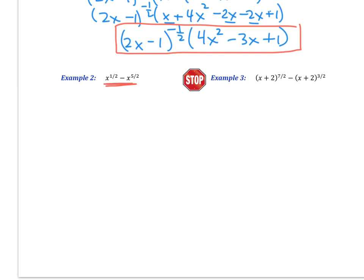So I can see here that I have x's in both, and it looks like the 1 half power is going to be the smaller of the 2. So I'm going to factor out x to the 1 half power. That's my GCF. And when I do that, x to the 1 half take away x to the 1 half leaves me with 1. And then minus, well, if I'm taking out a 1 half, that means I'm subtracting a 1 half. And so 5 halves minus 1 half is 4 halves, or x squared.